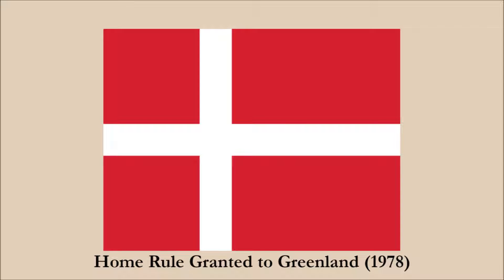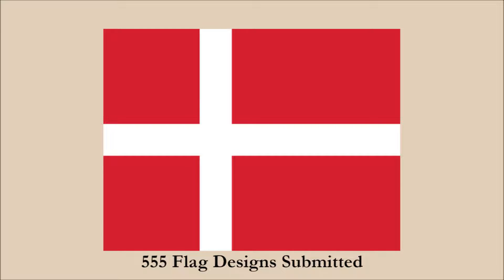Later, in 1978, Denmark granted more autonomy to Greenland by way of home rule, and the newly established government of Greenland decided to call for a flag for Greenland. 555 submissions were received. In the end, it came down to two designs which battled it out to become the flag of Greenland.